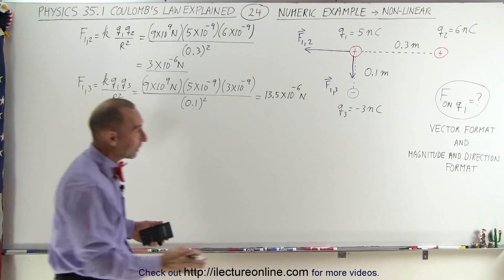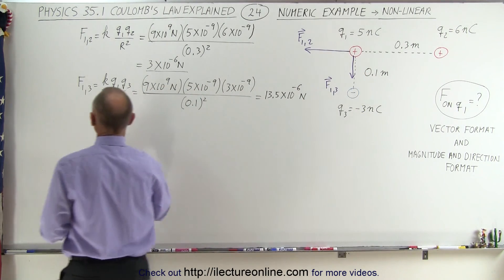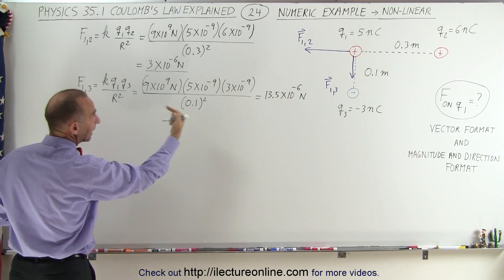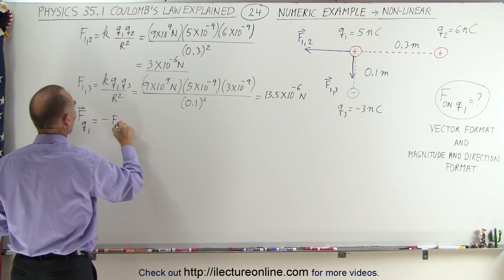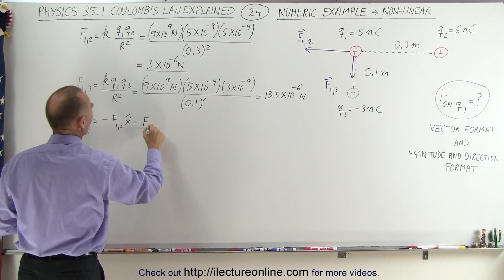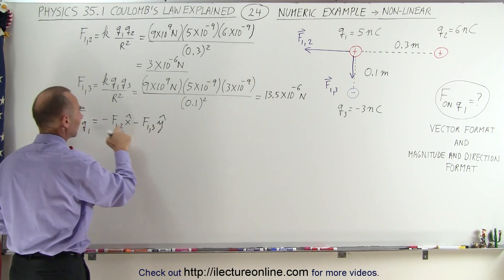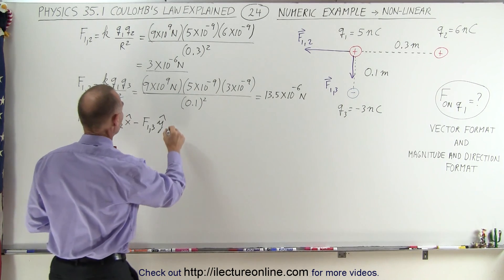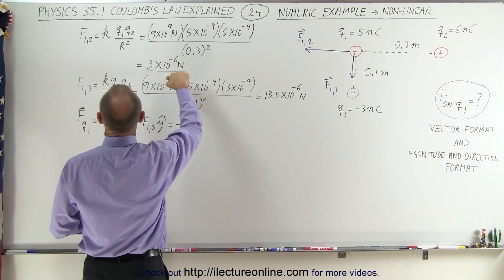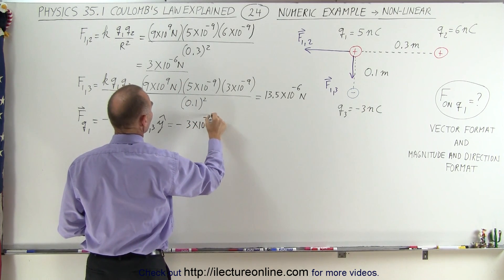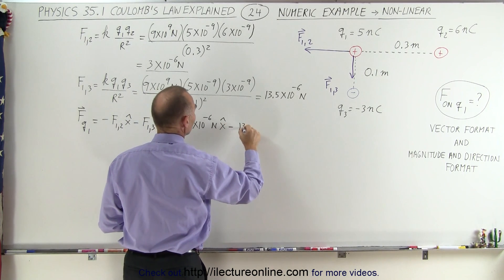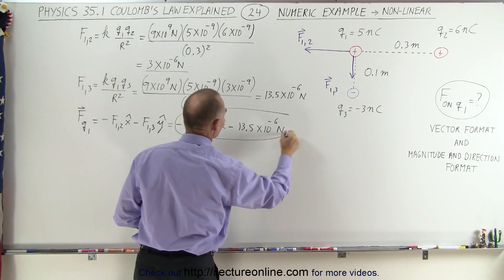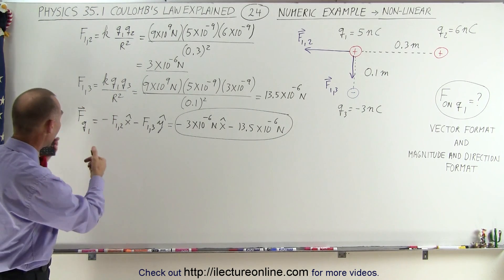Now if we're going to write that in vector format, since we have both the x and y components, we can write it as follows. The force on Q1 is equal to the x component pointing in a negative direction: minus F1,2 in the x direction, minus F1,3 in the y direction. We take the magnitudes and put negative signs in front of them because the x component is to the left and the y component is downward. So this equals minus 3 times 10 to the minus 6 newtons in the x direction, and minus 13.5 times 10 to the minus 6 newtons in the y direction. This is the vector format of the force on Q1.